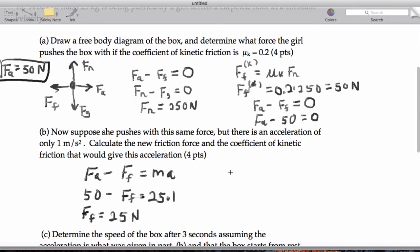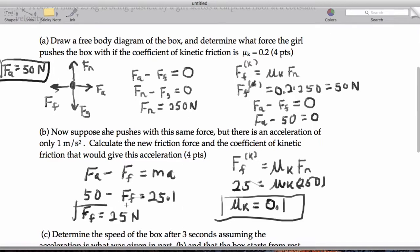So, to get the coefficient of friction, we've got kinetic friction equal to mu k times the normal force. So, that's going to tell us that 25 is going to be mu k times this 250, and that means that our coefficient of kinetic friction is going to be 0.1. So, we have this number and this number.